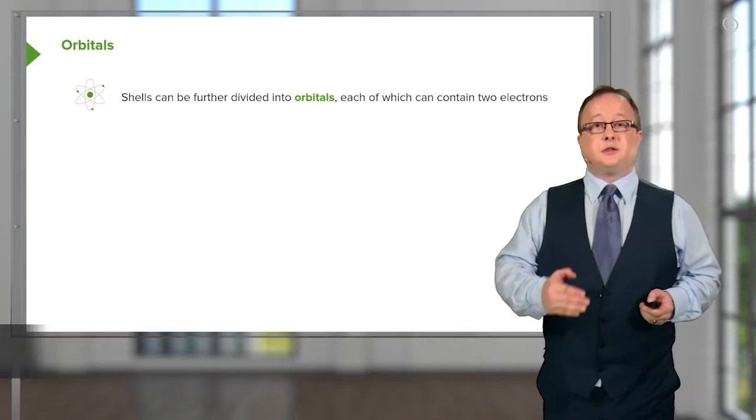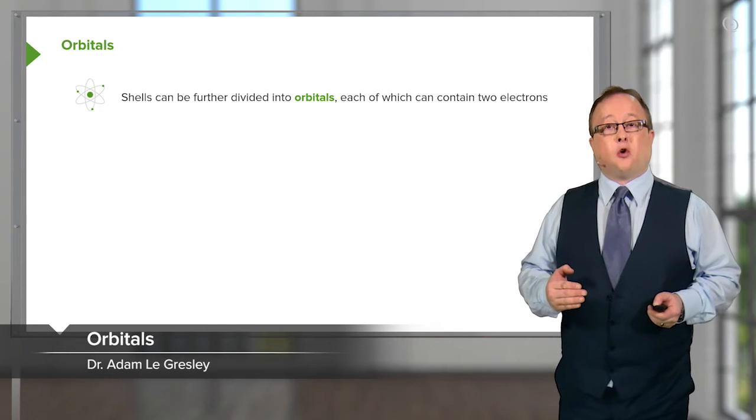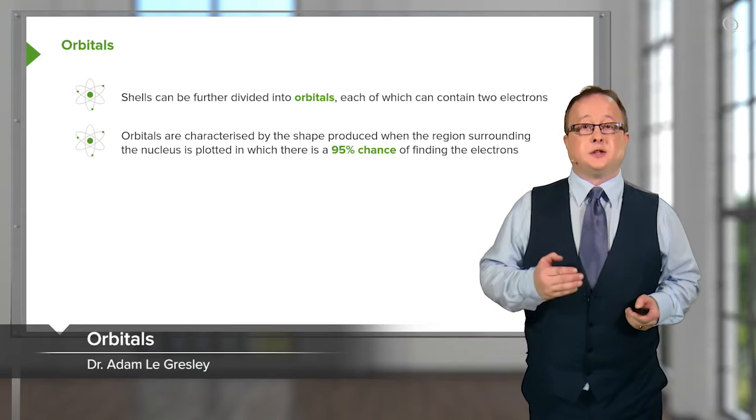As I mentioned, the shells themselves can be divided into orbitals, each of which contains two electrons.